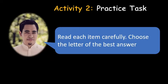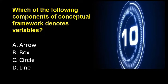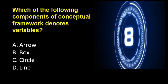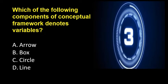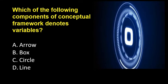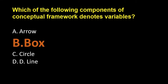For our practice task, read each item carefully and choose the letter of the best answer. Question 1: Which of the following components of Conceptual Framework denotes variable? A, arrow; B, box; C, circle; D, line. The answer is letter B, box.